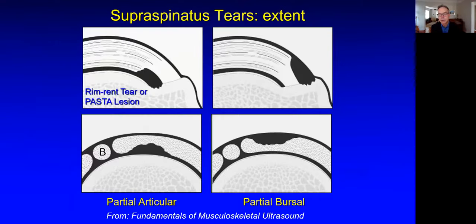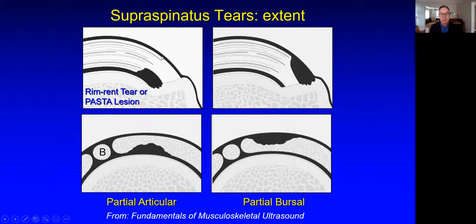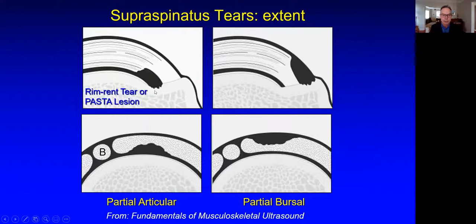How we characterize rotator cuff tears by ultrasound and MRI: if it is in contact with the articular surface but not the bursal surface, that would be a partial articular-sided tear. There are terms for this like rim-rent tear or PASTA lesion, which stands for partial articular-sided tendon avulsion, but call it what it is — it's a partial articular-sided tear. Note the cortical irregularity, more on this in just a moment.